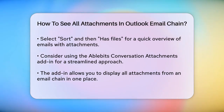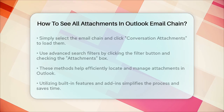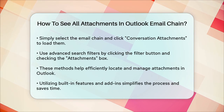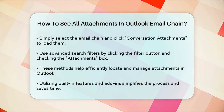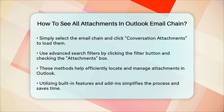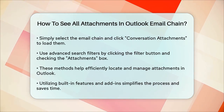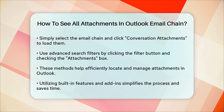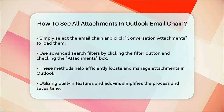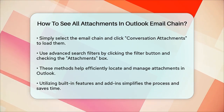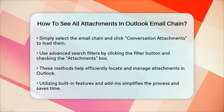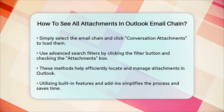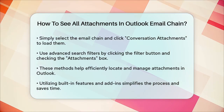In addition to these methods, you can also use advanced search filters. In the new Outlook, you can use the Advanced Search option by clicking the Filter button on the right side of the search box and checking the Attachments box. This ensures that only emails with attachments are shown in your search results.